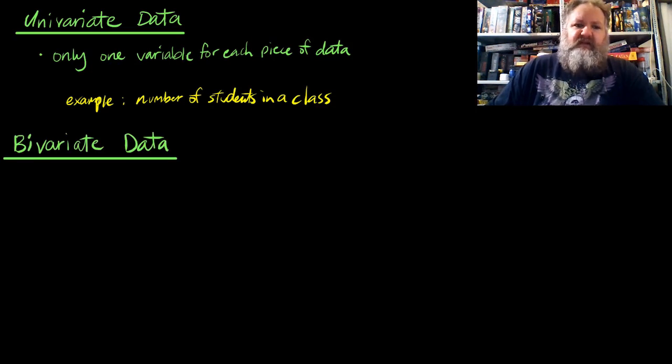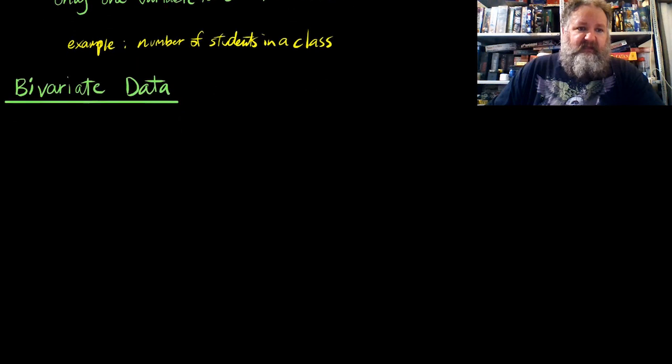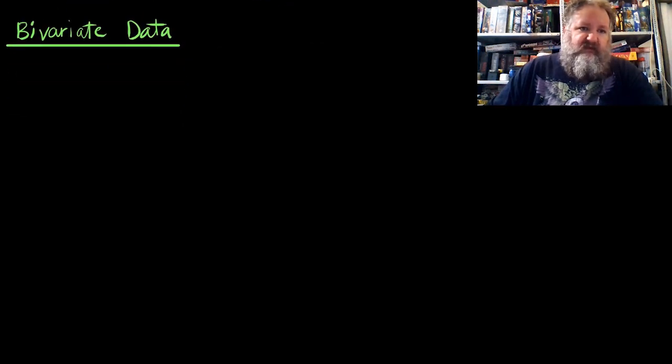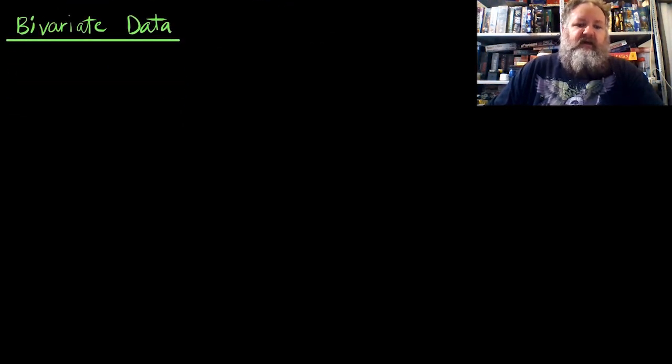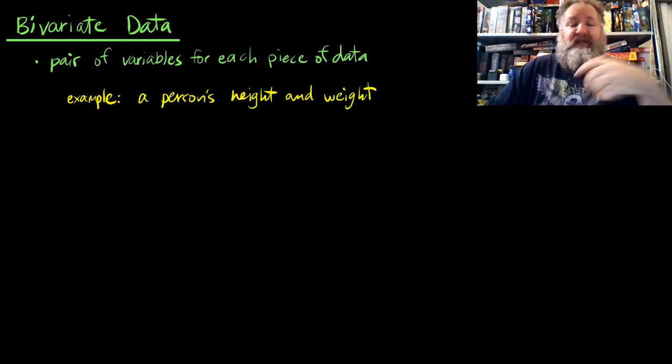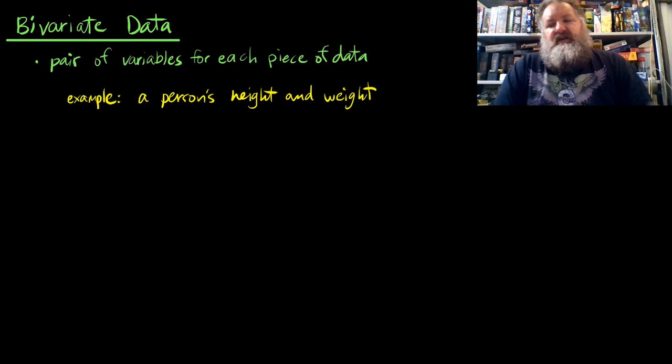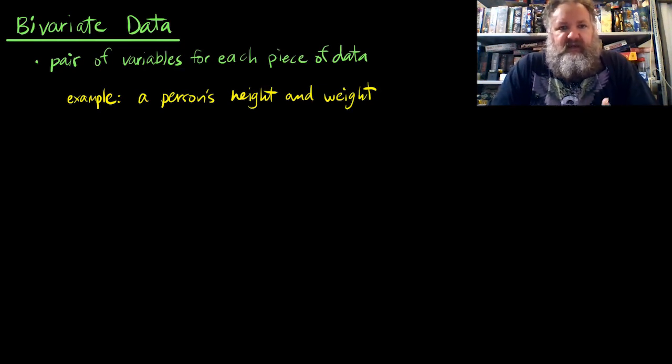You could probably apply some of your understanding about the way English works: uni means one, bi means two. So we're starting to talk about two sets of variables for each set of data. A great example is just a person's weight and height - two pieces of data that we need to think about.